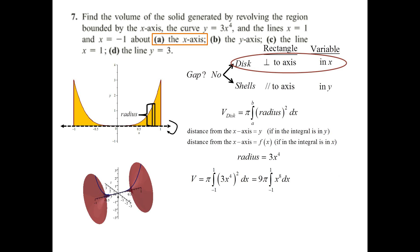Because x to the 8th is an even function, what we can do is double the integral and go from 0 to 1. We can use 0 as a lower limit instead of negative 1 — it's a little easier. You can do that only when the function on the inside is even. So we get 18π times x to the 9th over 9. Put a 1 in, we get 1/9. Times the 18π, the answer is 2π.